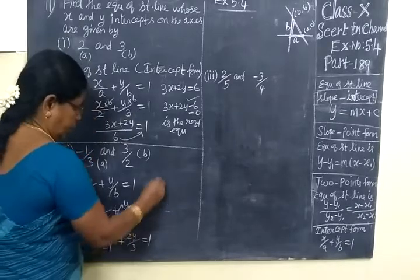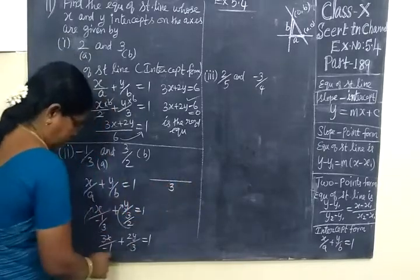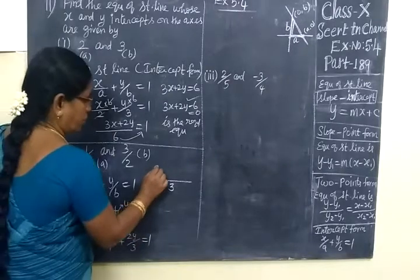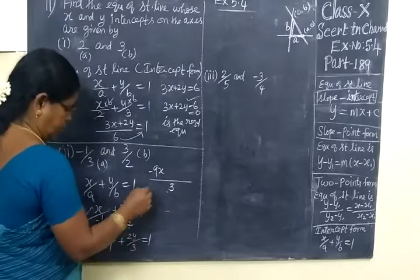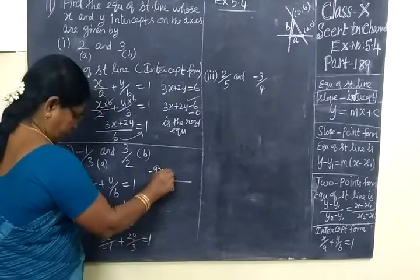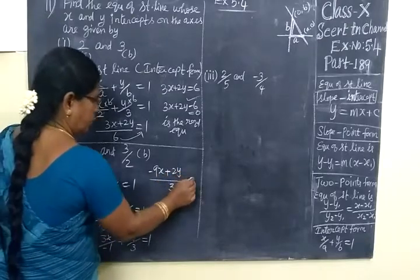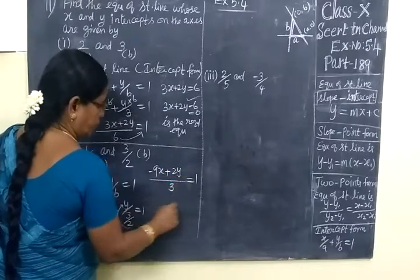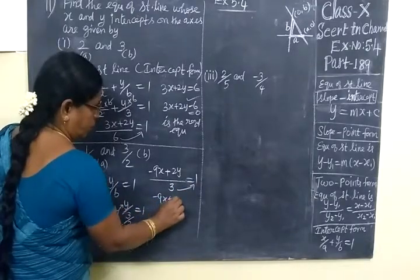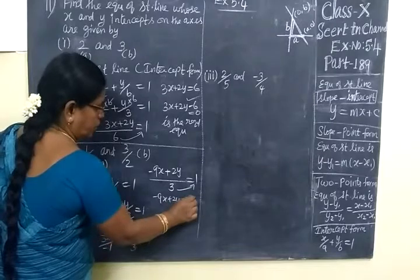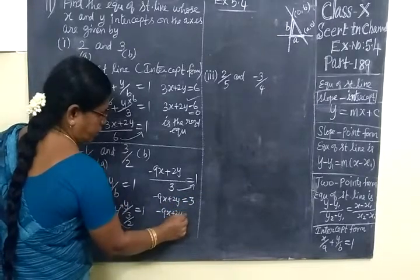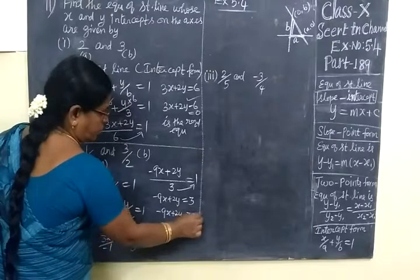LCM will be 3. Cross multiply. 3 times 3 is 9, so minus 9x. Plus 2y equal to 1. Then 3 will go to that side, so minus 9x plus 2y equal to 3. Now minus 9x plus 2y minus 3 equal to 0.